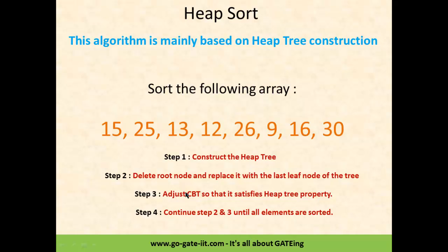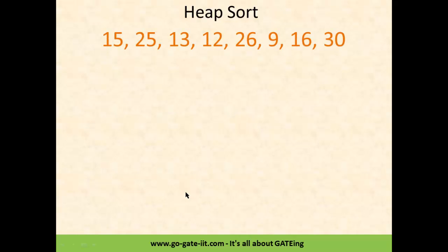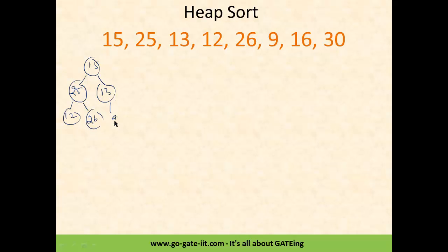Now let us see the problem. We have been given the following array, and we have to sort it. As we saw, the first step is to construct the heap tree. So first we will construct the CBT. With 15 being the first element, and as CBT is filled left to right: 25, 13, then 12, 26, 9, 16, and 30. So now this is the complete CBT.